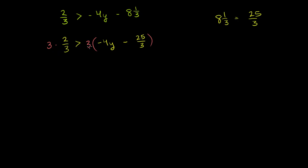If the 3 were a negative number — if I multiplied both sides by negative 3, or negative 1, or negative whatever — I would have had to swap the inequality sign. Now let's simplify. The left-hand side: 3 times 2/3 is just 2. 2 is greater than — distributing the 3 — 3 times negative 4y is negative 12y, and 3 times negative 25 over 3 is just negative 25.